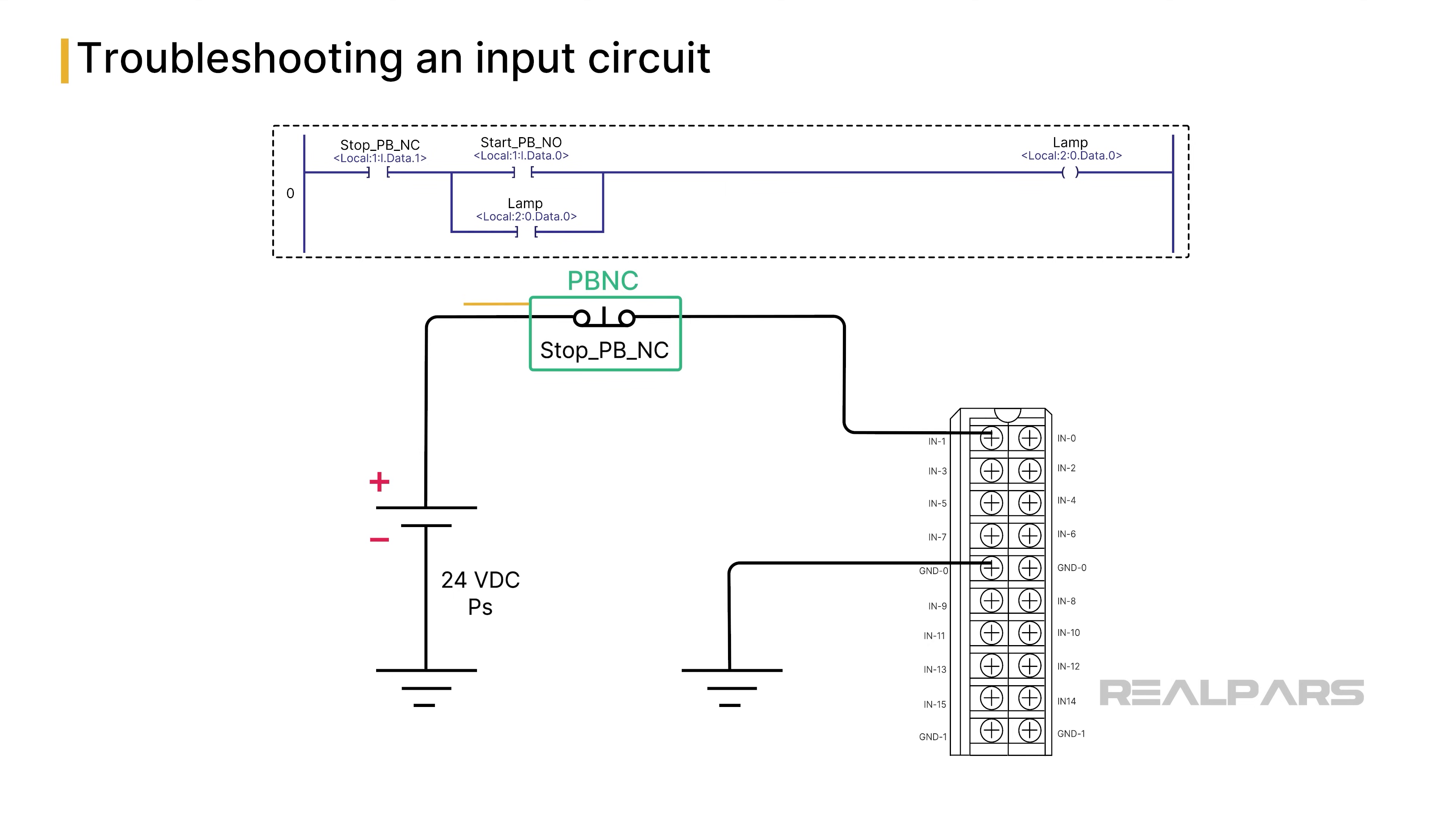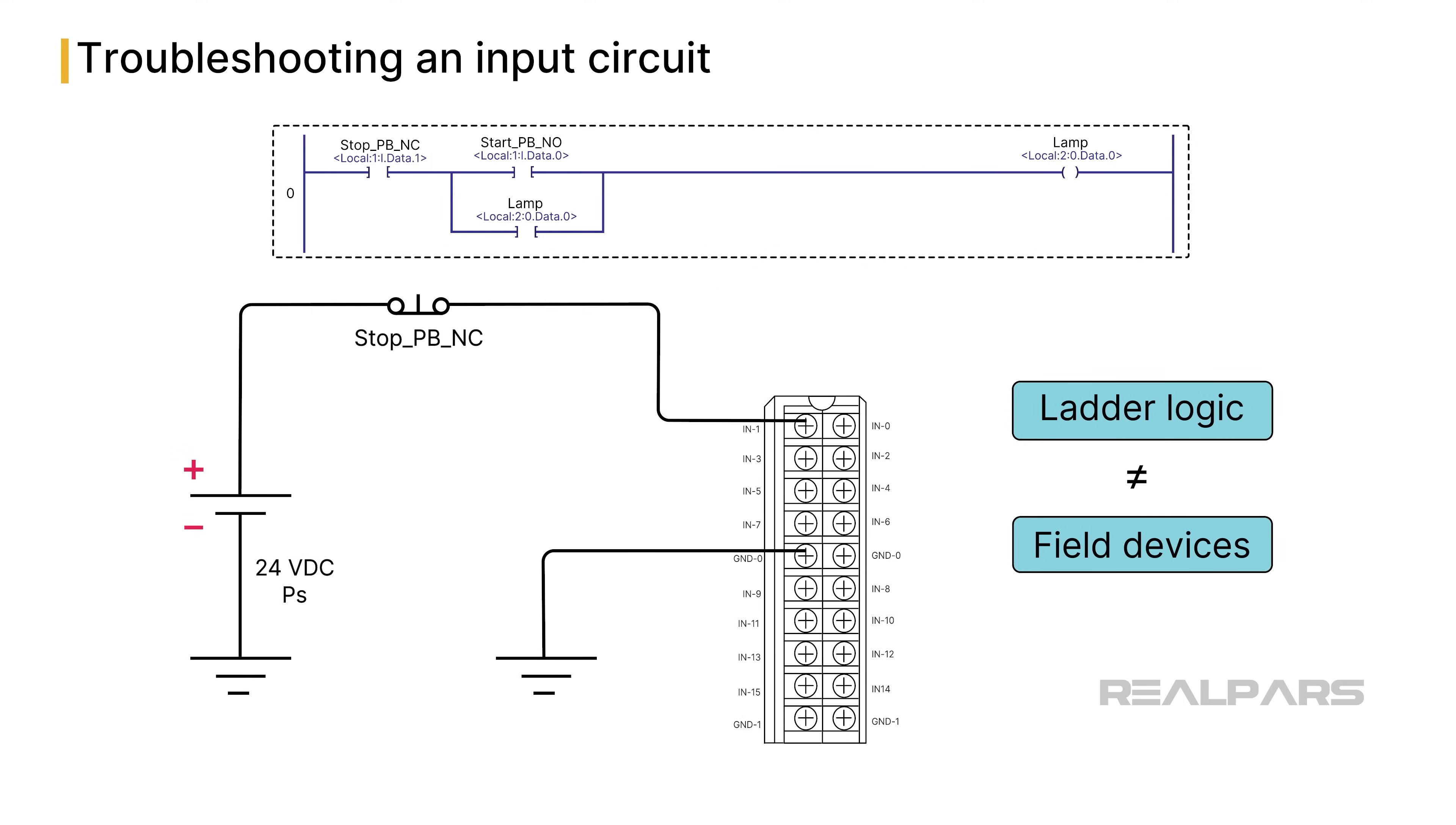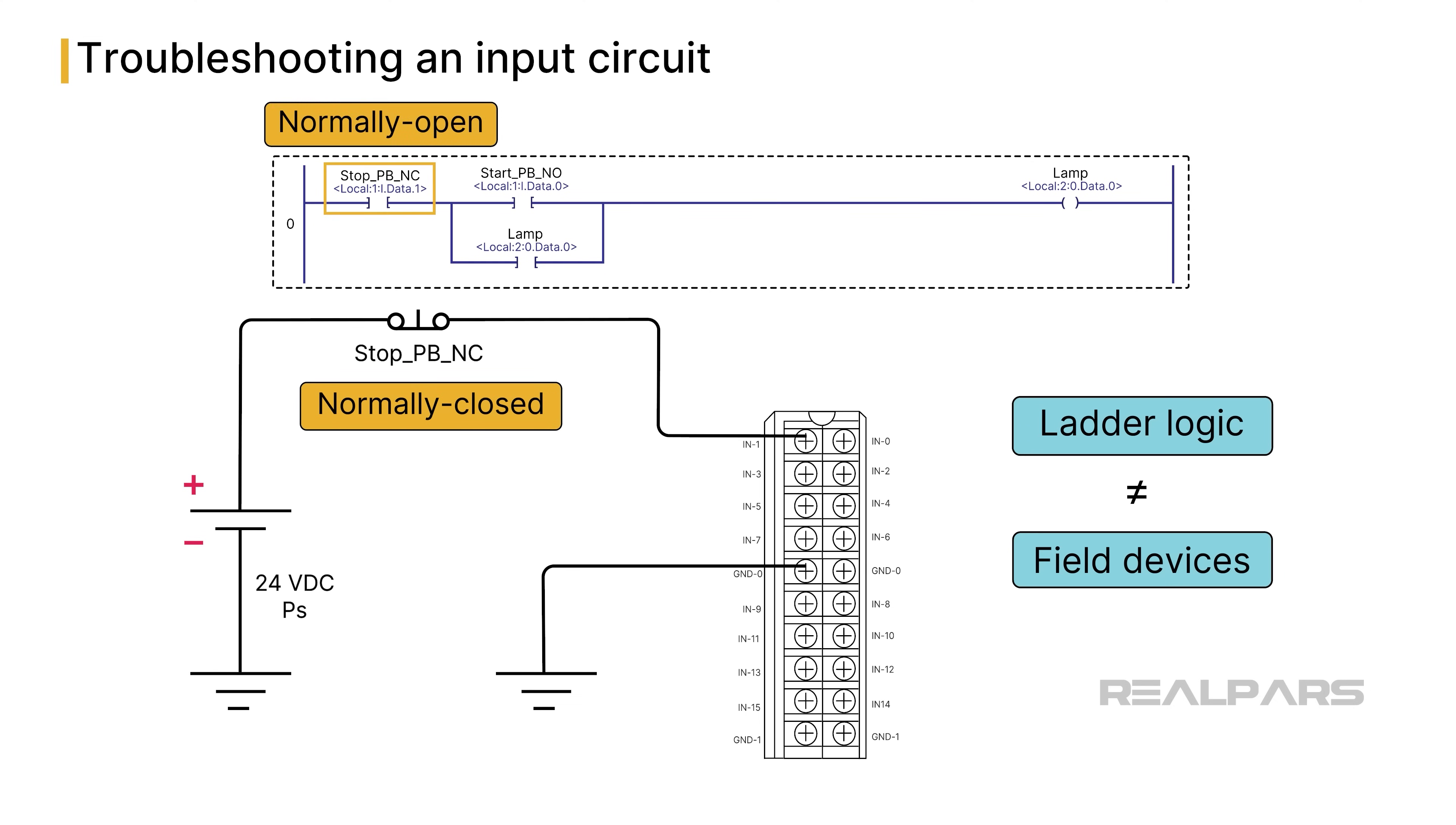As we can see, the condition of the PBNC switch determines the state of the first normally open contact on rung 0 of the ladder logic program. Here's a tip for you. A rookie mistake is to falsely assume that the PLC ladder logic symbol always matches the associated physical field device. That is not true. Our example has a normally closed field device and is associated with a normally open logic symbol on the ladder diagram. Programmers choose logic symbols based on the overall logic requirements of the program.